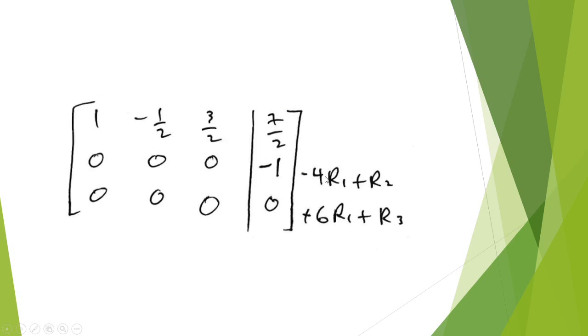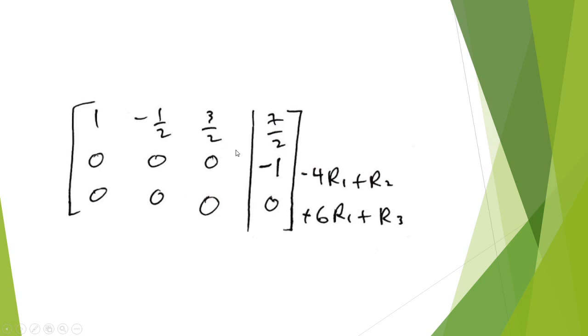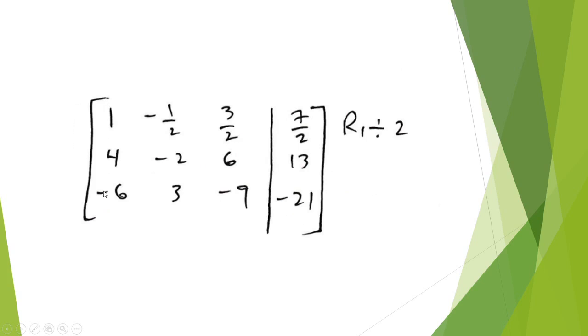So negative 4 times negative 1 half is going to cancel with negative 2 and give you 0. Same idea with 3 over 2. So we applied the operations here to get this, and we apply it to the bottom, multiplying this first row by 6 to cancel it out with negative 6 here.